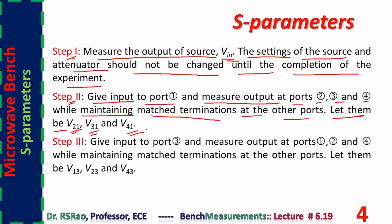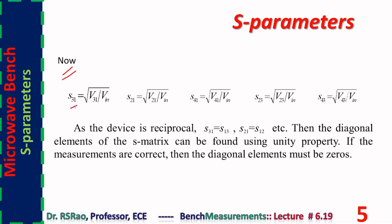These are voltages proportional to the power of the wave. Step three: give input to port three and measure the output at ports one, two, and four, while maintaining matched terminations at other ports. Let them be V₁₃, V₂₃, and V₄₃. The S-parameter S₃₁ can be found from √(V₃₁/V_in). S₂₁ can be found from √(V₂₁/V_in). S₄₁ can be found from √(V₄₁/V_in). S₂₃ can be found from √(V₂₃/V_in). As the device is reciprocal, S₃₁ = S₁₃, S₂₁ = S₁₂, etc.